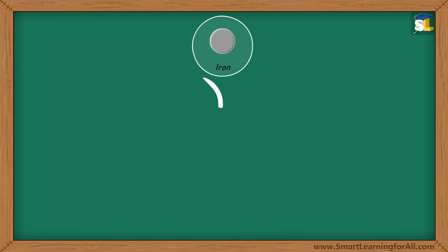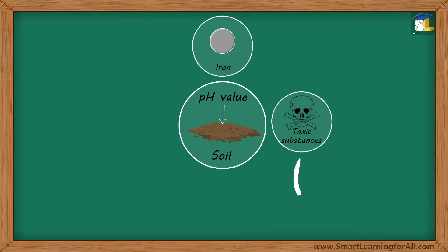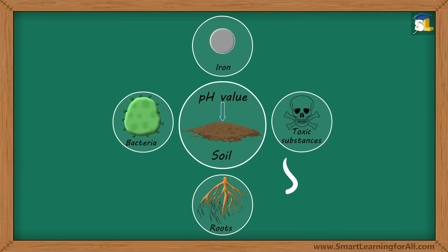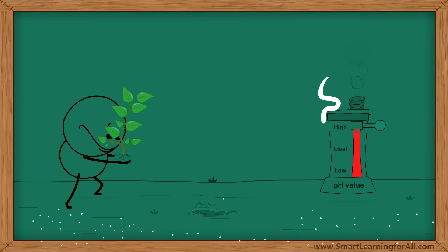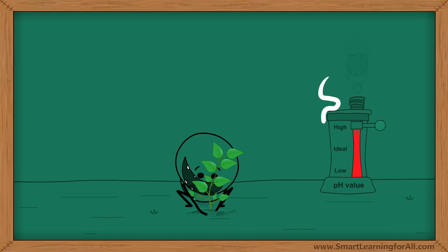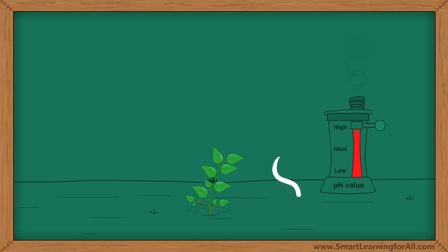Also, besides the availability of iron, pH value of soil also affects the level of toxic substances, growth of bacteria and roots, etc. Thus, when a farmer has to grow any crop, he has to know the value of pH of his soil for a good yield. Otherwise, his crop will face undesirable consequences and ultimately, he may suffer a great loss.